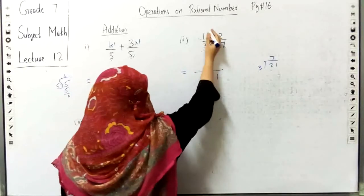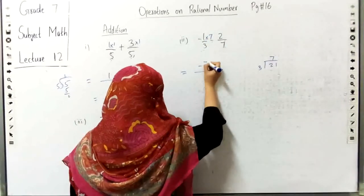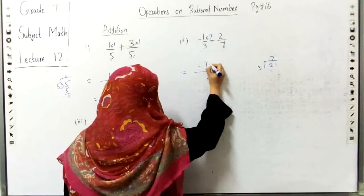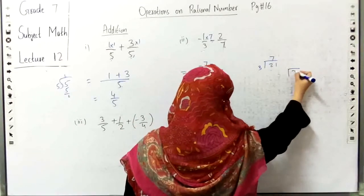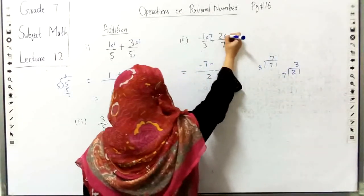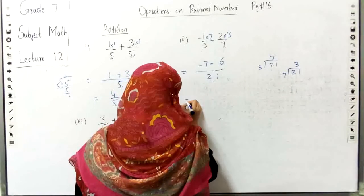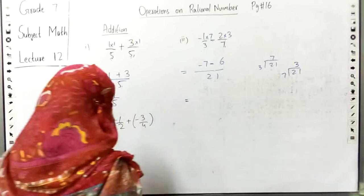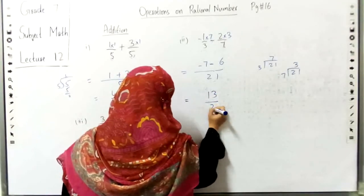We will multiply 1 by 7, so we will multiply minus 7. Then we will divide by 3, multiply 2 by 3, so 6. Then 7 minus 6.